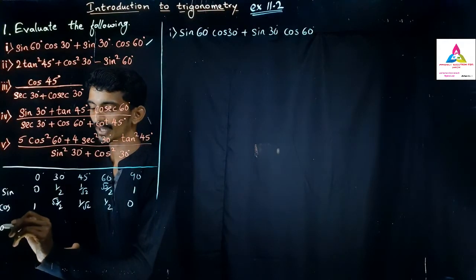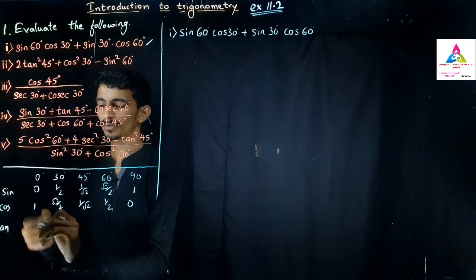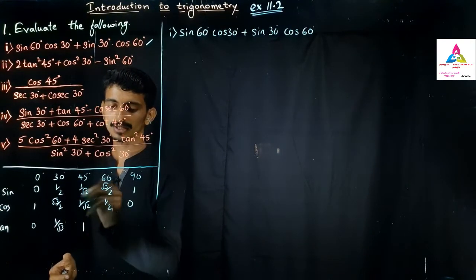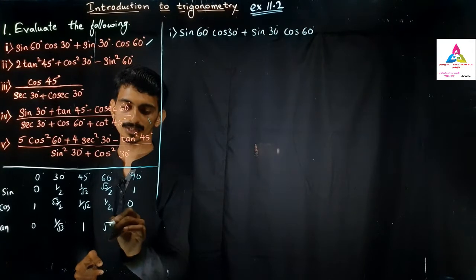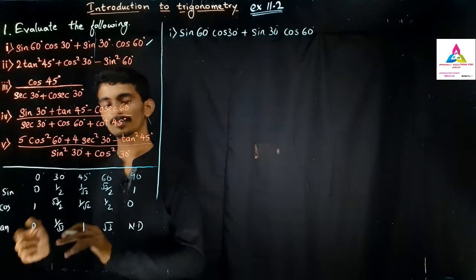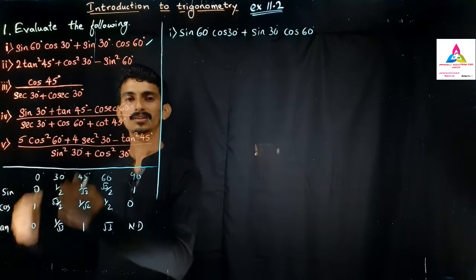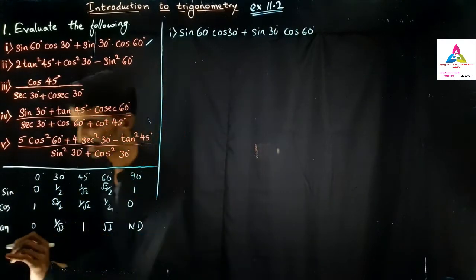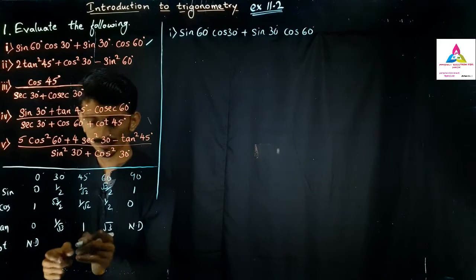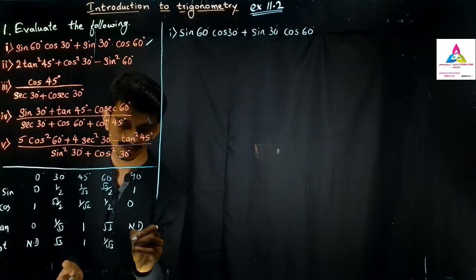For tan, we divide sine by cosine: tan 0° = 0, tan 30° = 1/√3, tan 45° = 1, tan 60° = √3, and tan 90° is not defined. For cotangent, it is the reciprocal of tan: cot 0° is not defined, cot 30° = √3, cot 45° = 1, cot 60° = 1/√3, cot 90° = 0.